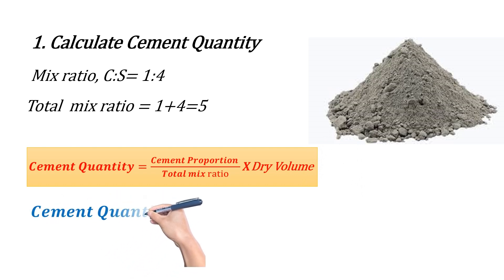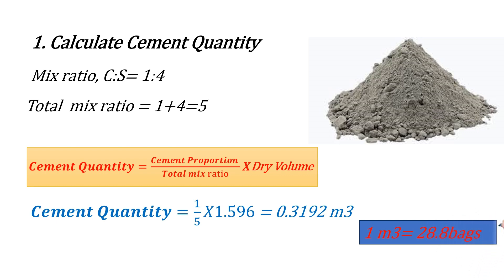That equals 0.3192 m³. To convert this volume to the number of cement bags, as we know that 1 m³ of cement equals 28.8 bags, so on multiplying 0.3192 into 28.8 bags, we will get 9.192 bags.